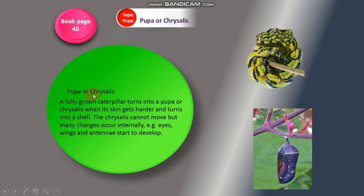Pupa or chrysalis: a fully grown caterpillar turns into a pupa or chrysalis when its skin gets harder and turns into a shell. When the caterpillar is in this stage, the skin changes and the chrysalis forms.